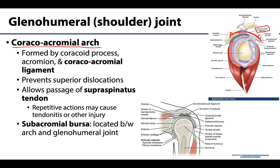The dominant structure running through this region is the tendon of the supraspinatus muscle, one of the rotator cuff muscles. Repetitive actions at full flexion or full abduction can cause this tendon to be pinched against the coracoacromial arch, leading to tendonitis or other injuries such as rupture. Based on this location, the supraspinatus tendon is the most commonly injured rotator cuff muscle, and we will return to this topic throughout musculoskeletal anatomy.